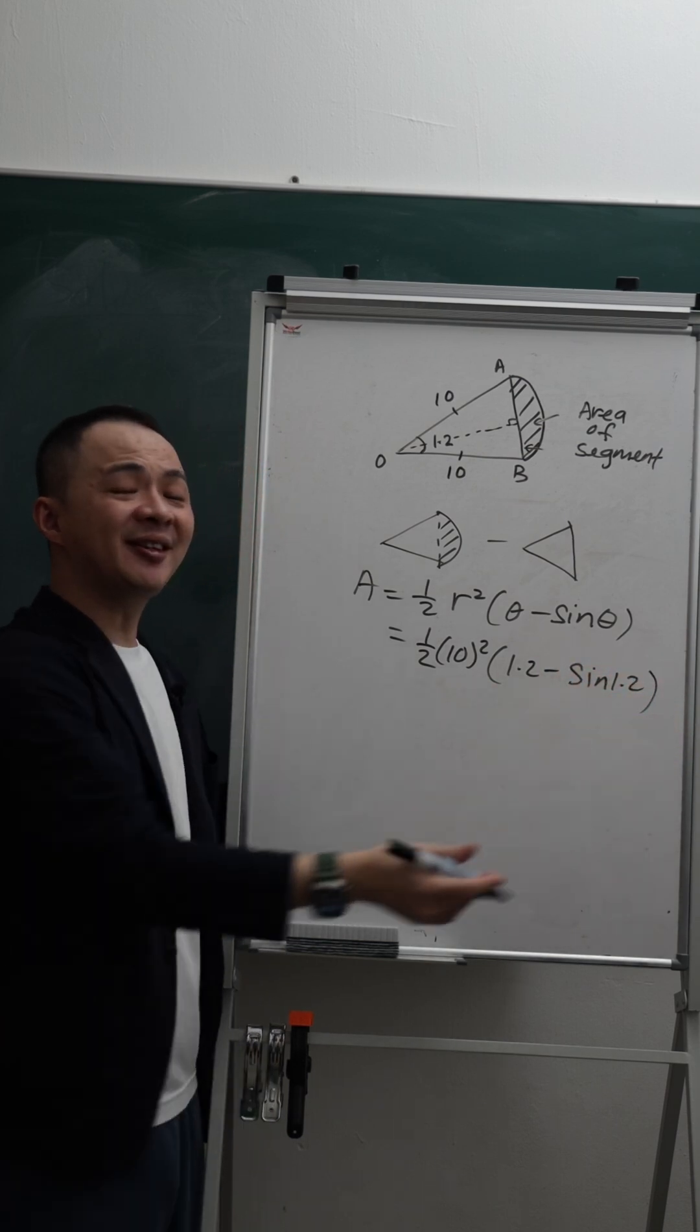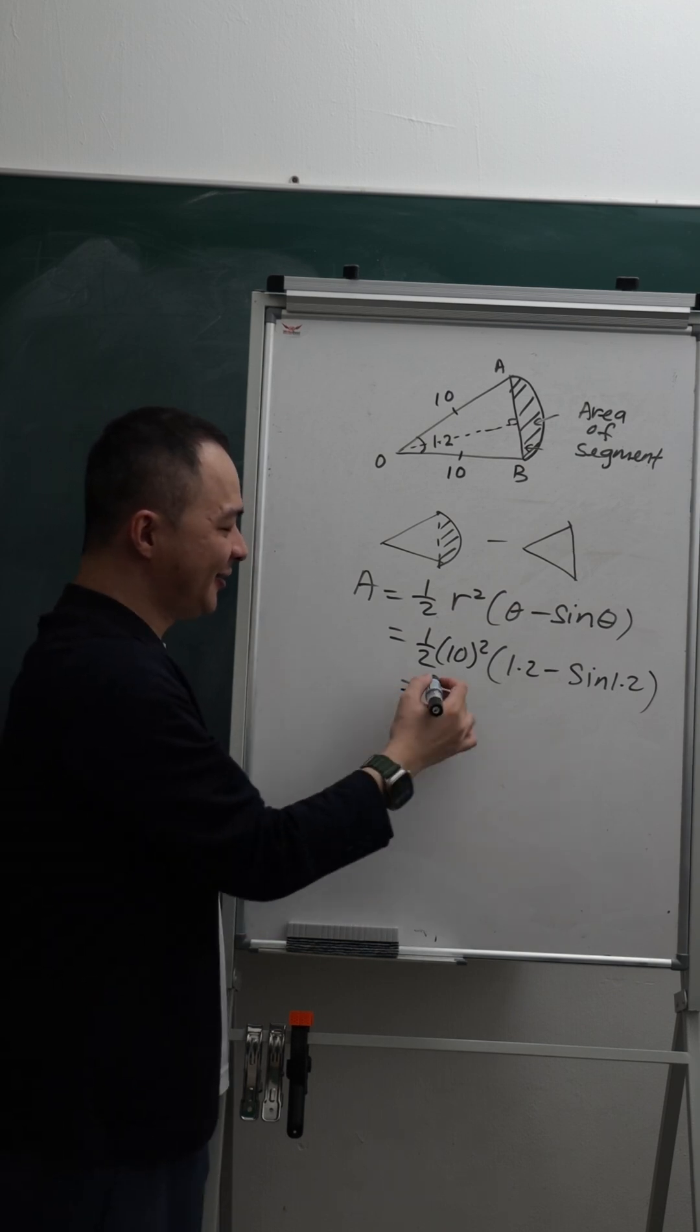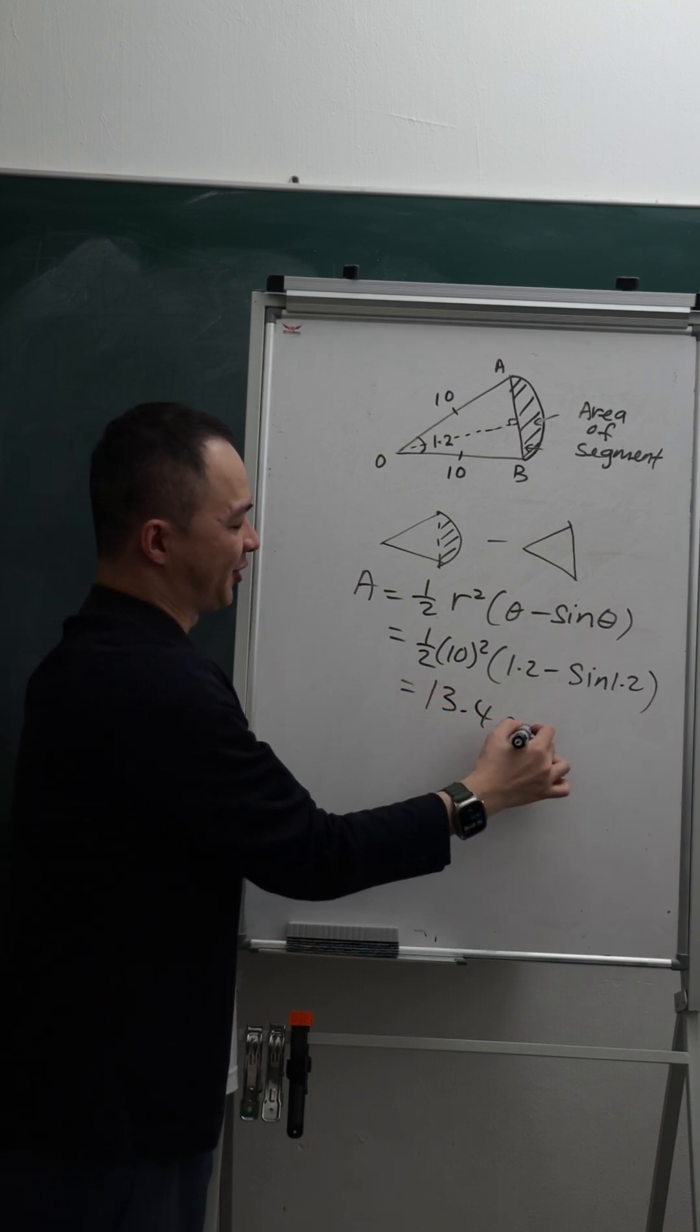So if you type everything into the calculator, you can easily get the answer 13.4 square units. Here we go.